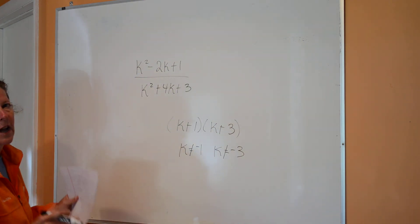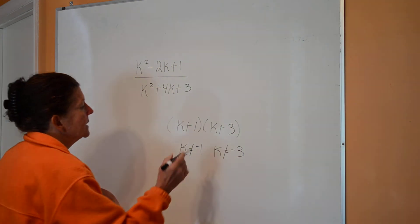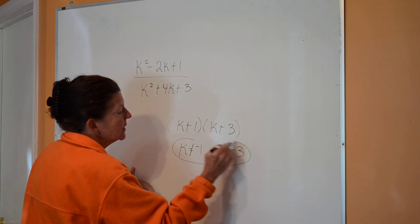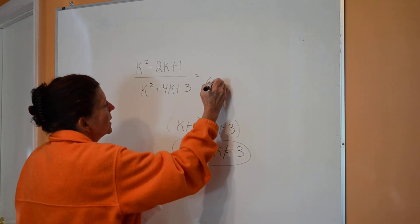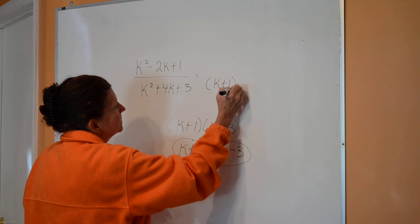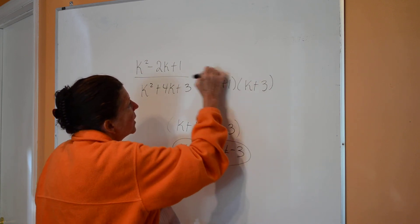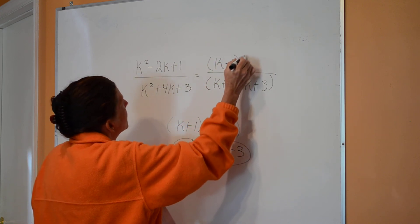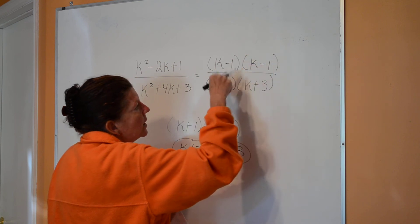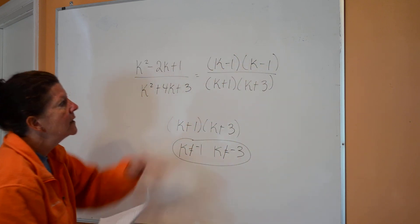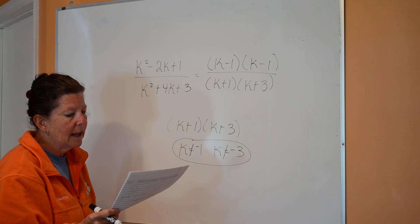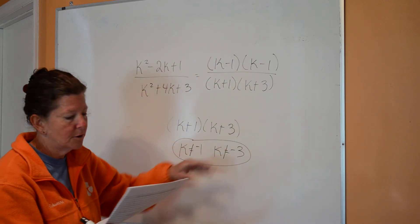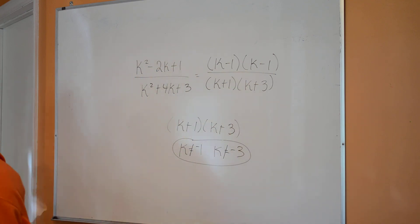If they tell me to simplify and find excluded values, that's asking for something different. I find the excluded values first, then continue and factor the top — I get (k−1)(k−1). Nothing cancels out, so that's as simplified as it gets. Here's the simplified form and here are the excluded values.